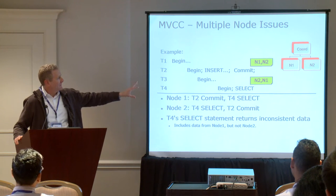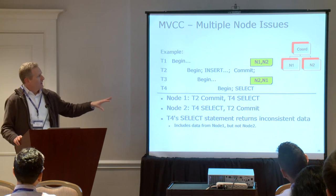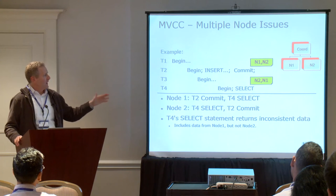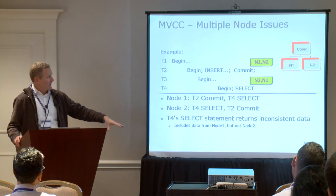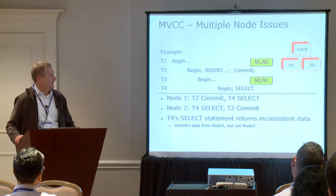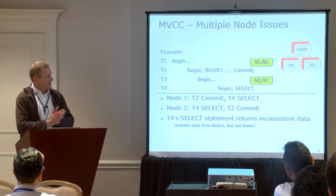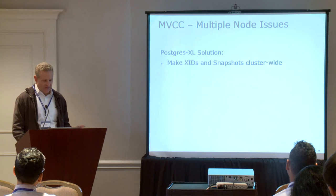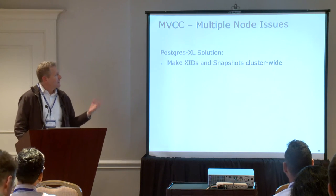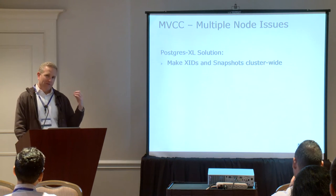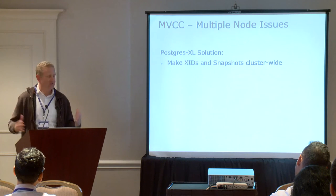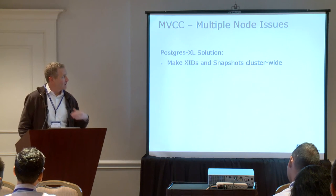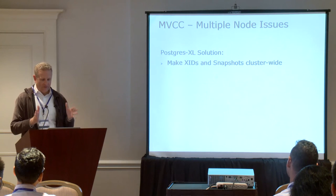If transaction two committed right about the same time that on T4 a new select began, it could be that it committed on node one, and then on node two, meanwhile T4 started running the select immediately after that commit, but the select started running before the commit on node two. So that select would violate the C in ACID — it wouldn't be getting a consistent view of the data. For Postgres XL, the way we solve this problem is we make transaction IDs and snapshots cluster-wide, so we always get a consistent view.